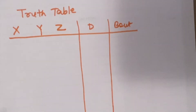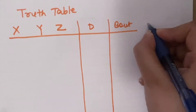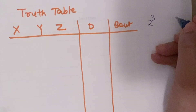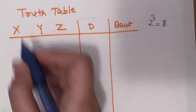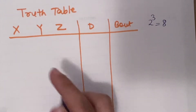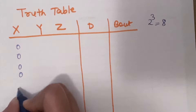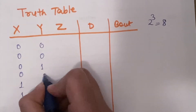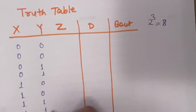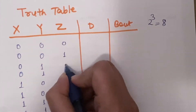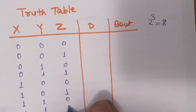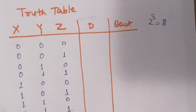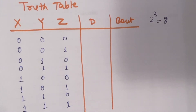Now we will see the truth table of the full subtractor. Since we have three single-bit inputs, we have 2 to the power 3, which equals 8 combinations. The eight input combinations are: 000, 001, 010, 011, 100, 101, 110, 111.